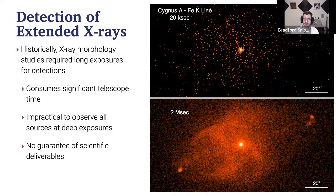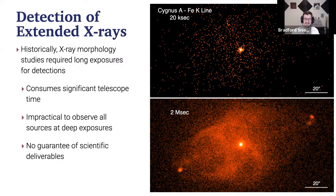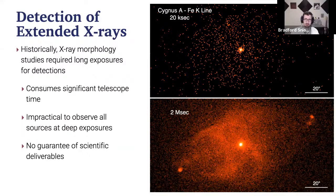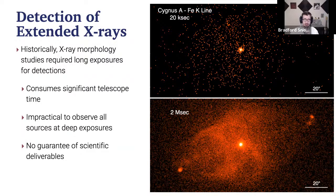Those familiar with X-ray morphology studies know that you generally use a long exposure to get any definitive detection, due to the typically low signal-to-noise from the extended emitting region. These studies come with notable drawbacks: they consume significant telescope time, it's generally impractical to observe all sources at deep exposure, and there's no guarantee of scientific deliverables just because you observe longer.